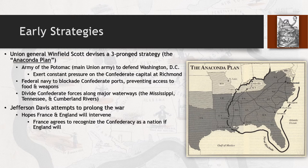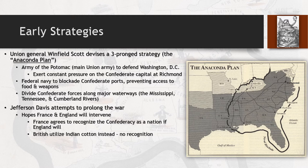France agrees to intervene, but only conditionally — if England decides to do so first. When left up to England, the British decide they are going to seek commerce elsewhere and not get involved in America's internal affairs. They end up going with India as their source of cotton and choose not to recognize the Confederacy. Europe agrees to completely stay out, which is another major disadvantage for the Confederacy.